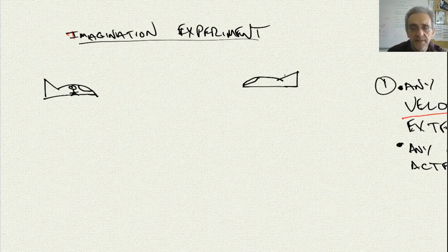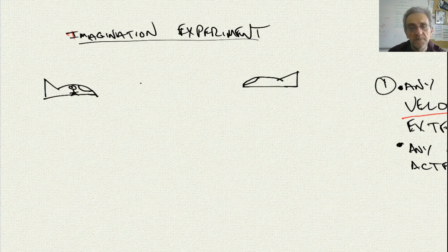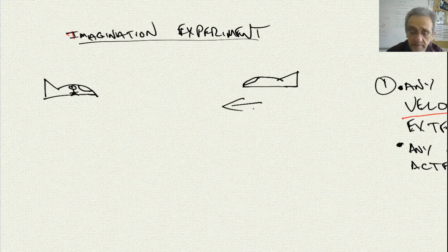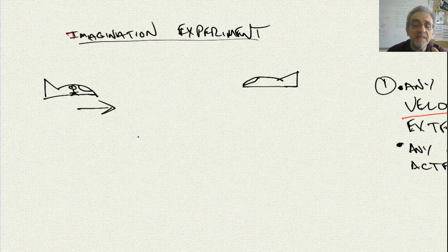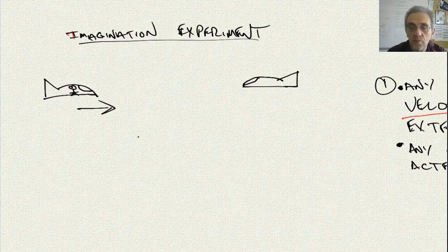The other thing you need to know is that there are no stars, no planets, nothing else in the universe except these two spaceships. Now you've got to ask yourself: if you're getting closer to the other spaceship, who's moving? Is the other spaceship moving towards you, or are you moving towards the other spaceship? Pause the video here and see if you can come up with an experiment to determine which spaceship is moving.